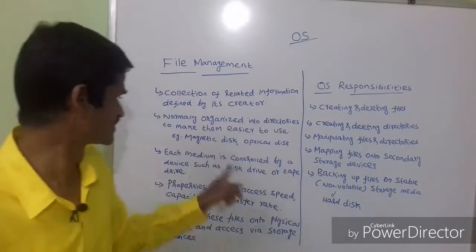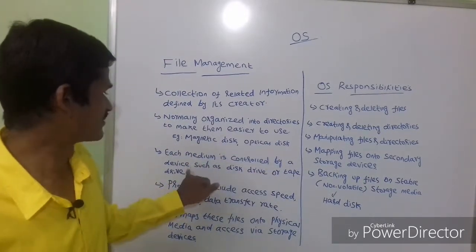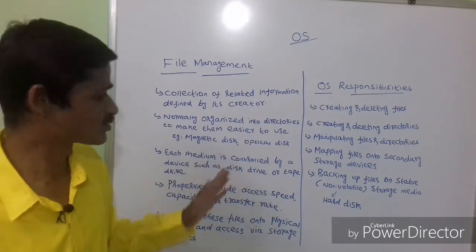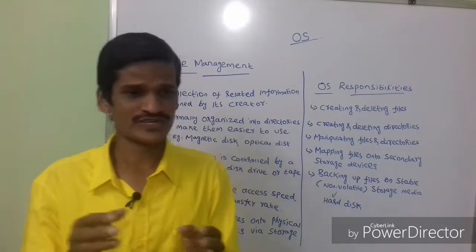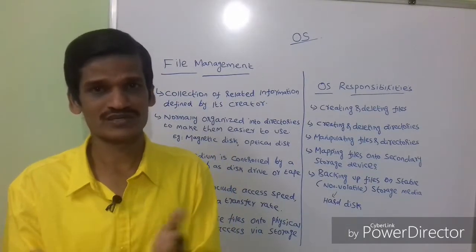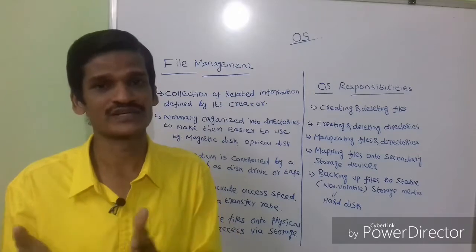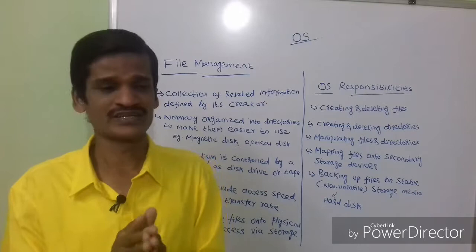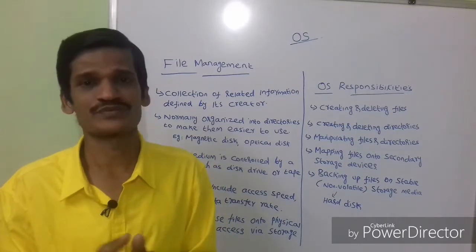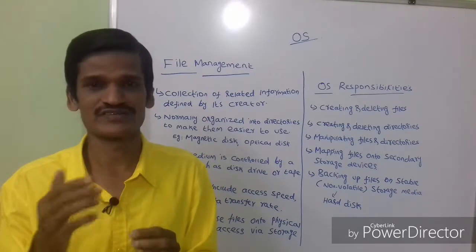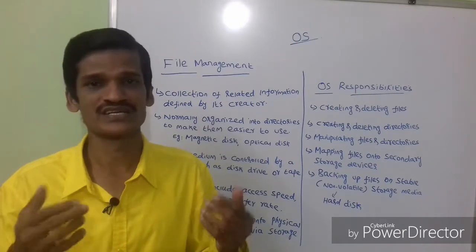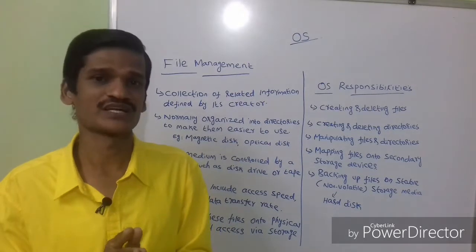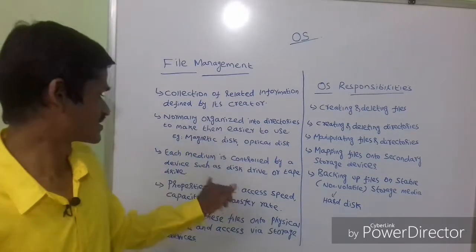Each storage medium is controlled by a device such as a disk drive or tape drive. For example, your hard disk is controlled by a corresponding disk drive, and a magnetic tape is controlled by a corresponding tape drive. So each and every medium is controlled by its corresponding drive.